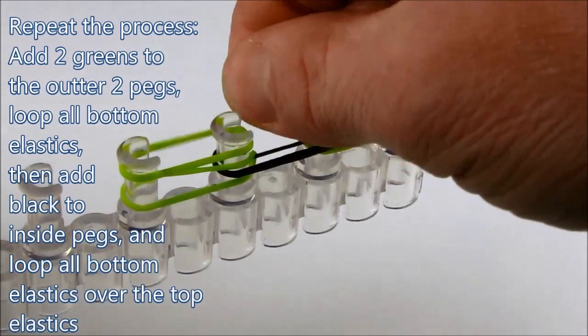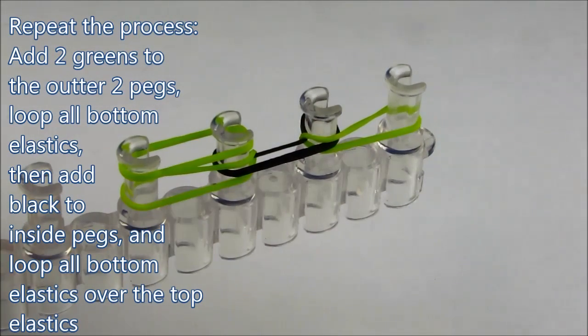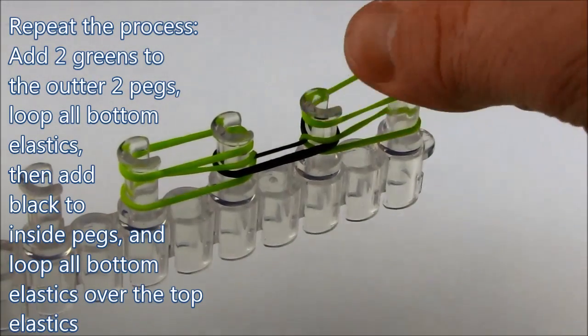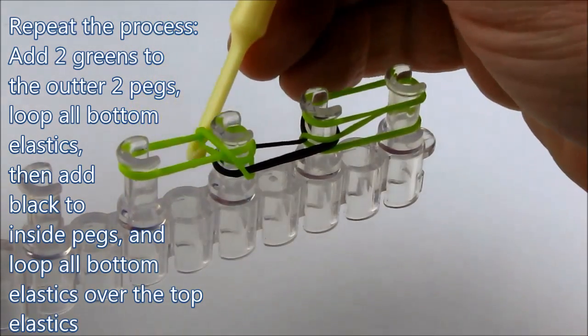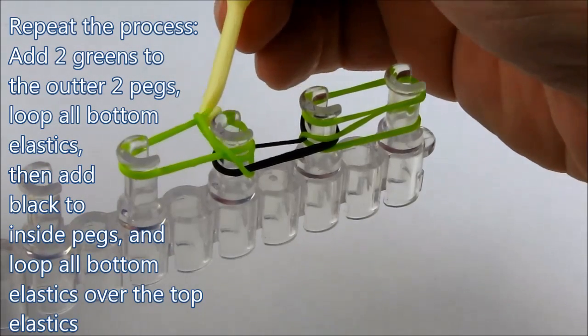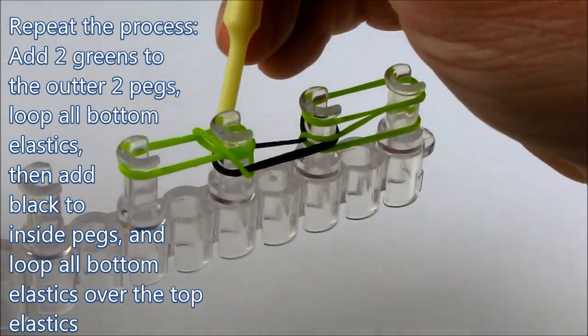Once again place green elastics to the outer pegs. Now loop any bottom elastics over the top elastics where there are 2 elastics on each peg.